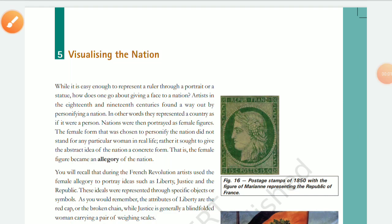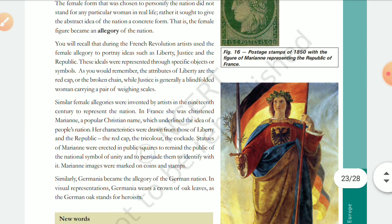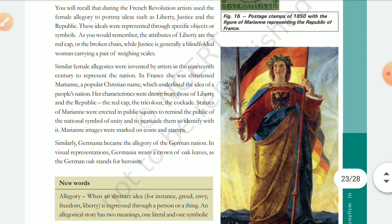We have studied the visualizing of nations, where nations were visualized as allegories. The allegory of France was Marianne and the allegory of Germany was Germania, so Germania became the allegory of the German nation.